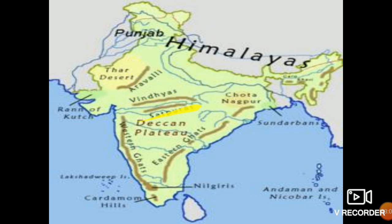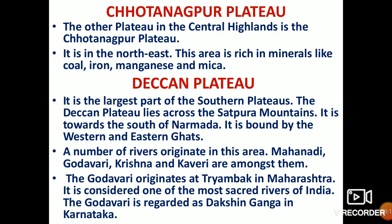The Chhota Nagpur Plateau is the other plateau in the Central Highland, located in the north-east. This area is rich in minerals such as coal, iron, manganese, and mica.